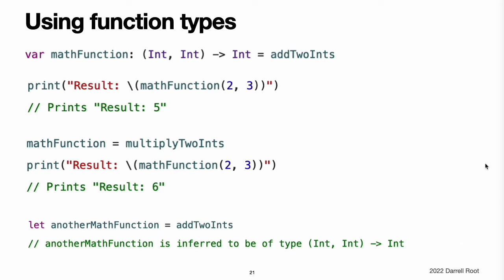Using function types. You use function types just like any other types in Swift. For example, you can define a constant or variable to be of a function type and assign an appropriate function to that variable. This can be read as: define a variable called mathFunction which has a type of a function that takes two Int values and returns an Int value. Set this new variable to refer to the function called add2Int. The add2Int function has the same type as the mathFunction variable, and so this assignment is allowed by Swift's type checker. You can now call the assigned function with the name mathFunction. A different function with the same matching type can be assigned to the same variable in the same way as for non-function types. You can also leave it to Swift to infer the function type when you assign a function to a constant or variable.